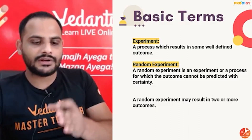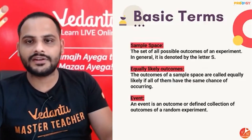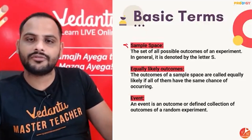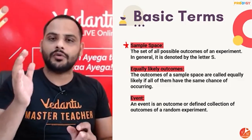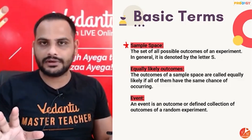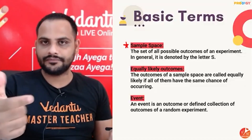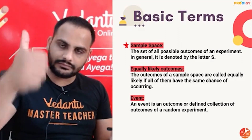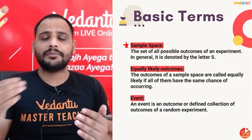We know the outcome will be either head or tail, but which one exactly we cannot say — that is a random experiment. Sample space is the first important thing in all probability questions. Sample space means the set of all possible outcomes in an experiment. For one coin, the possible outcomes are head and tail. For a dice, getting one, two, three, four, five, or six — these are the six possible outcomes.